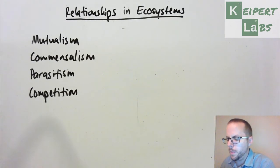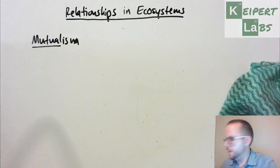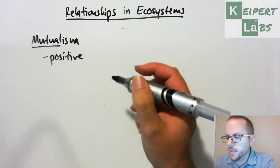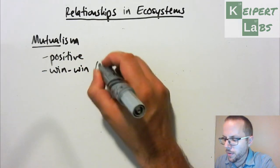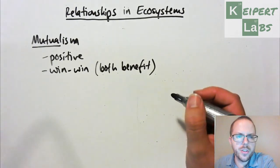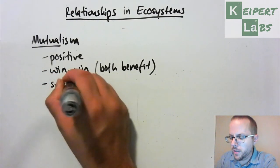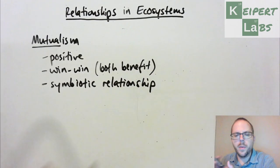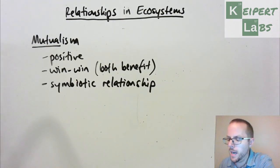Let's start by looking at mutualism. Hopefully the word 'mutual' gives you an indication that this is a positive relationship. It's essentially a win-win for two organisms — both benefit. What that means is we're getting two or more organisms working in what we call a symbiotic relationship, a symbiosis, working together in a pairing or tandem in a way that each one benefits the other because of their presence.